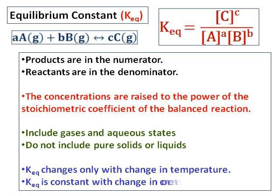While writing the equilibrium constant, we include only gases and aqueous states — we do not include solids or liquids. If one of the reactants or products is a solid or a liquid, it will not show up in the equilibrium constant. Another point to note is that the equilibrium constant changes only with temperature; it does not change with change in concentration. Because K is defined as a ratio of concentrations, if one concentration changes, the other changes accordingly and keeps the value of K constant.